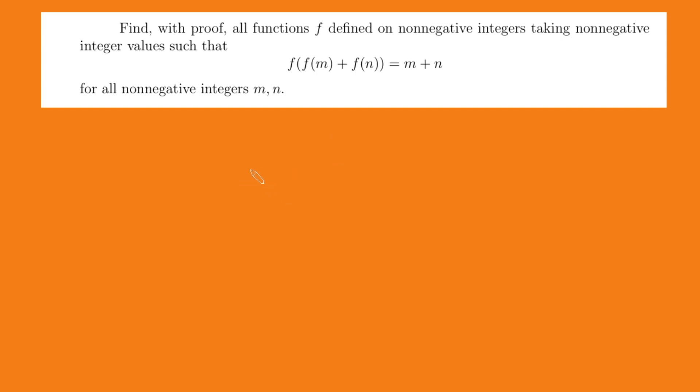The first thing we're going to do is the standard thing. We're going to plug in some numbers to try and work out the value of f at certain values. The first thing I'm going to do is try and work out the value of f of 0. So I'm going to call it a. And so if I substitute m and n are both 0 into this, I get f of f of 0 here, which would just be a plus another f of 0 is another a equals 0 plus 0. So in other words, f of 2a equals 0.